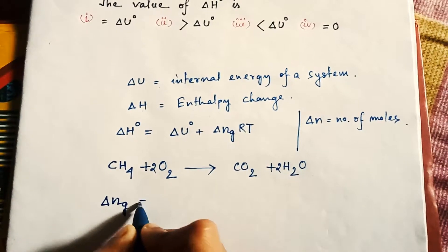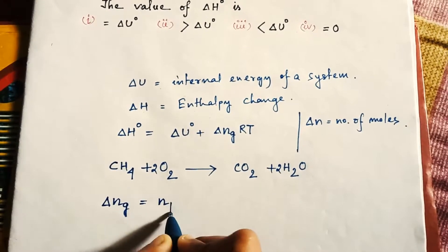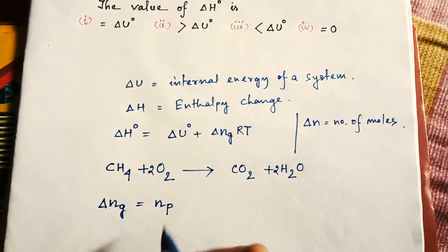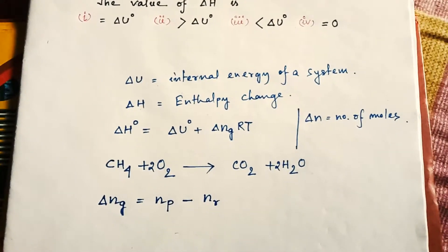Now after balancing this equation we will find out the number of gaseous moles, that is Δng equal to number of moles of gaseous product minus number of moles of gaseous reactants.